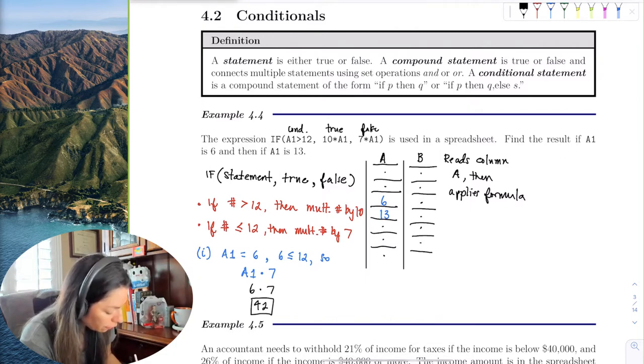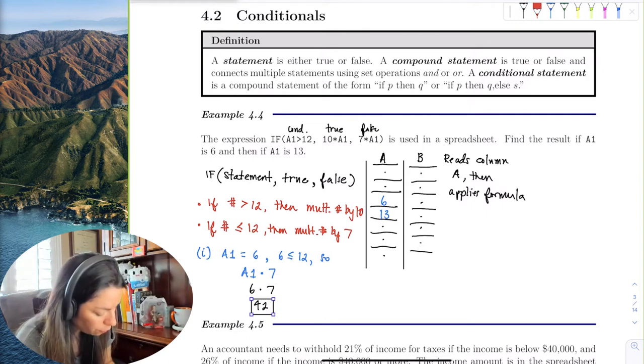So that's the first one, and essentially what I'm doing here now is putting 42 in this box. This box spits out 42.